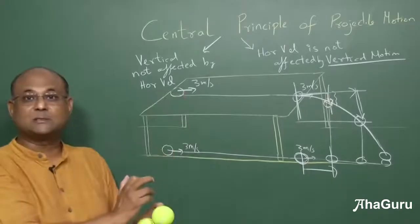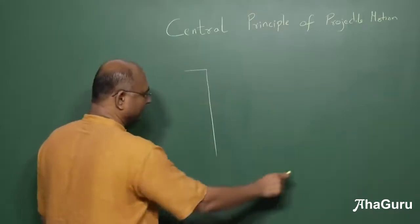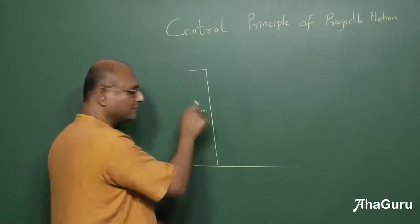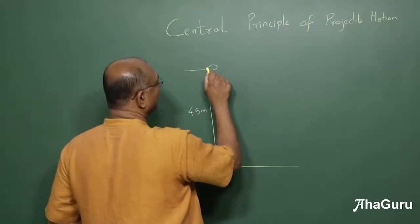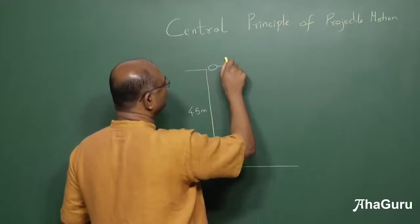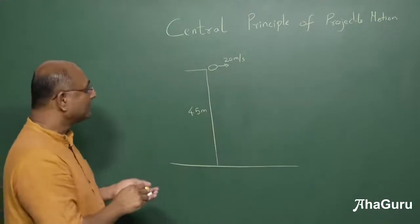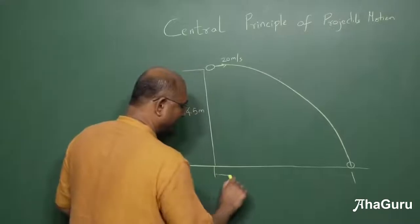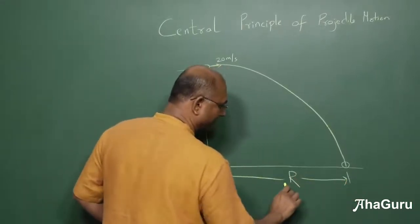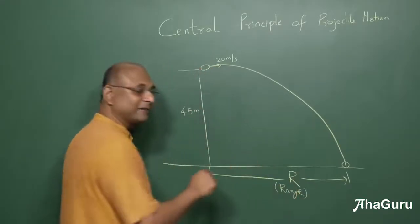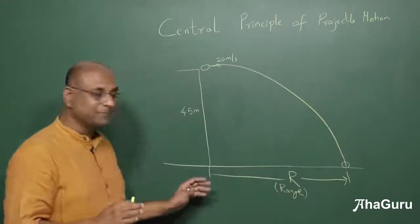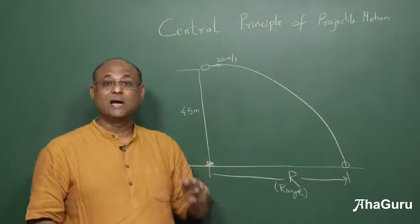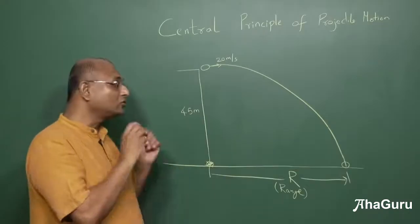Let us apply both principles to an example. I have a building of height 45 metres, and I throw a ball horizontally with a velocity of 20 metres per second. The ball travels and hits the ground some distance away. We want to find how far from the base of the building it lands — this is called the range, or the horizontal displacement of the ball.